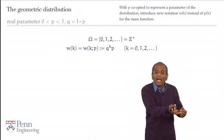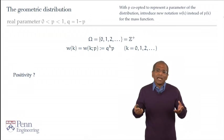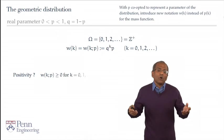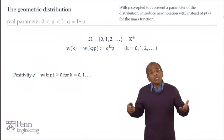Of course, we should verify positivity and normalization. Again, let's start with positivity. And we realize immediately that q to the power k is always positive, p is always positive, and therefore, positivity is trite. These geometric probabilities are strictly positive for every non-negative integer.